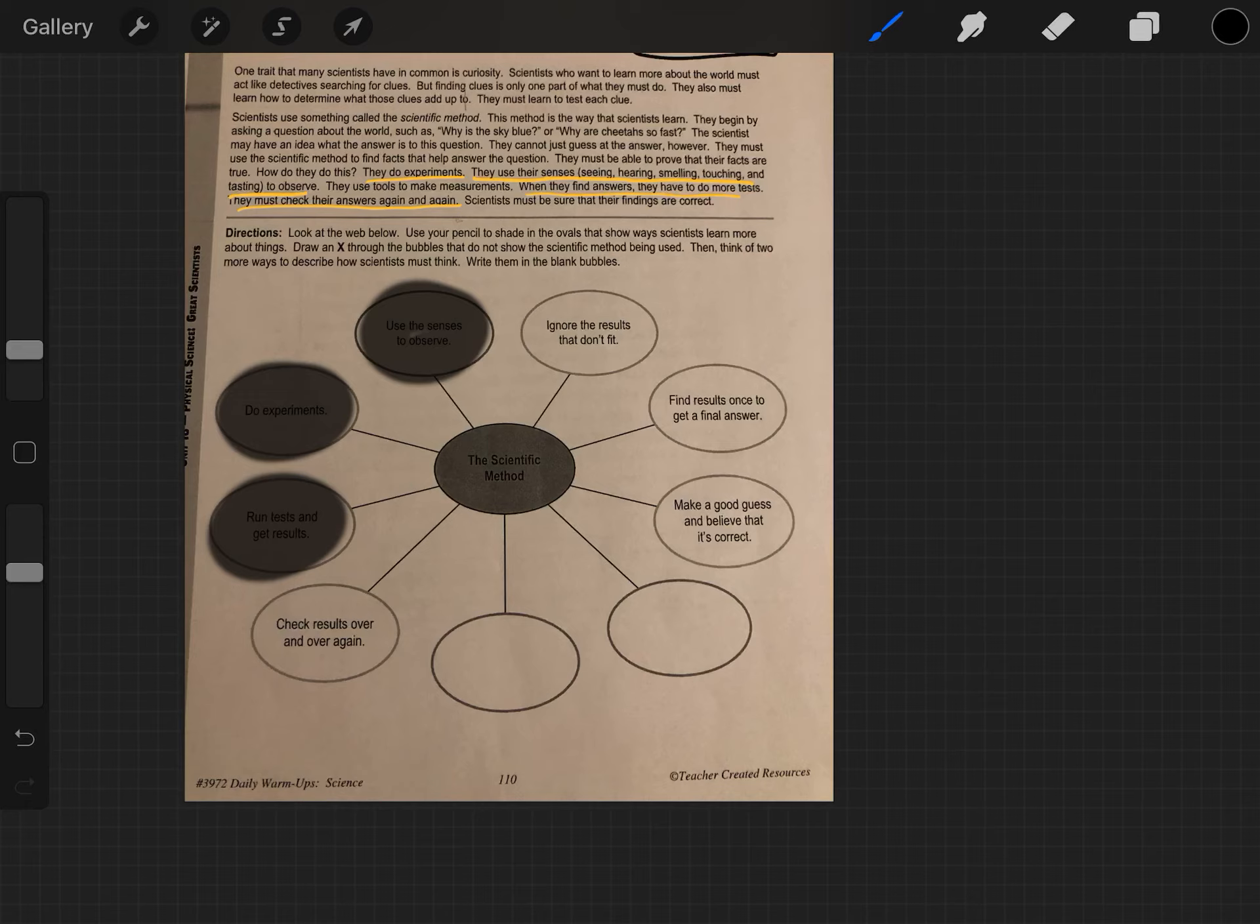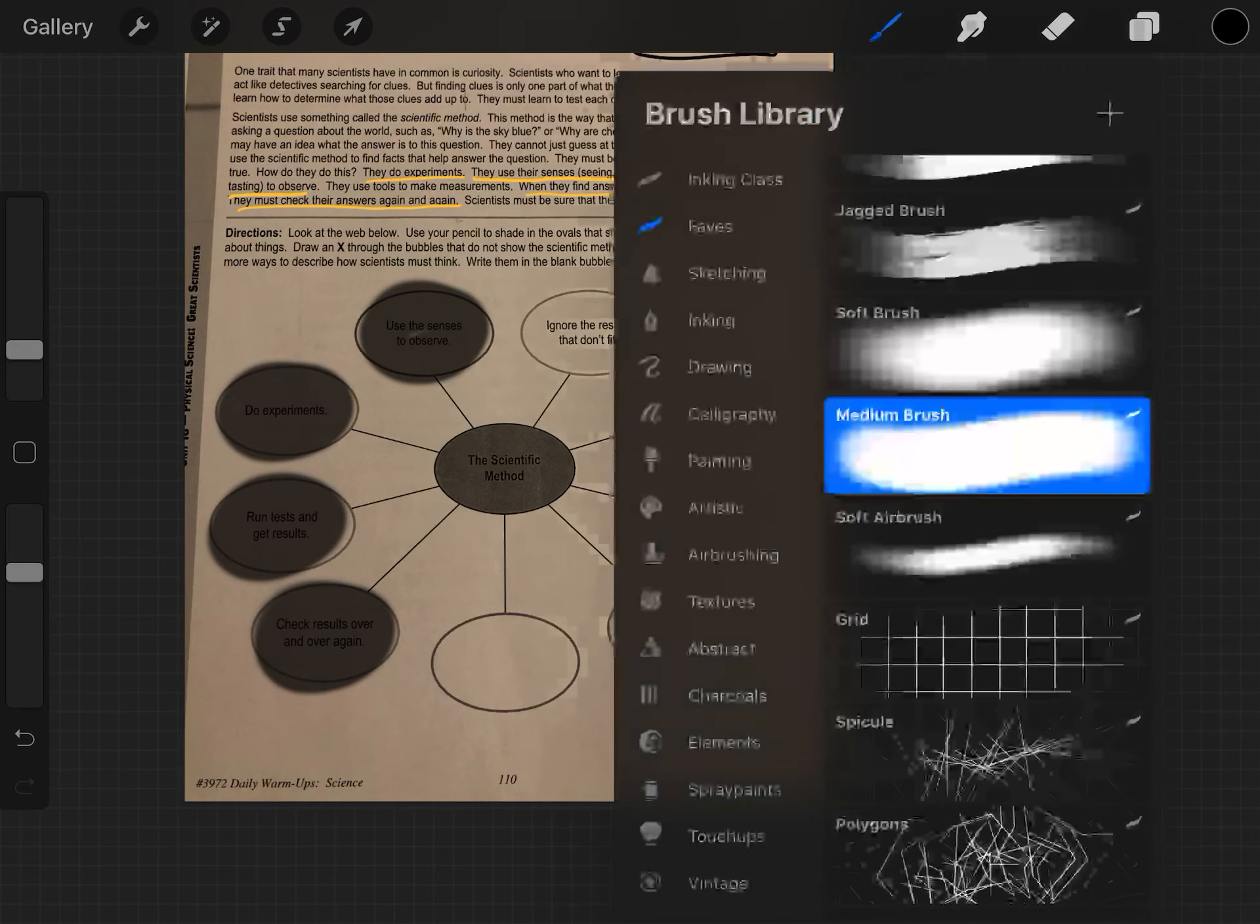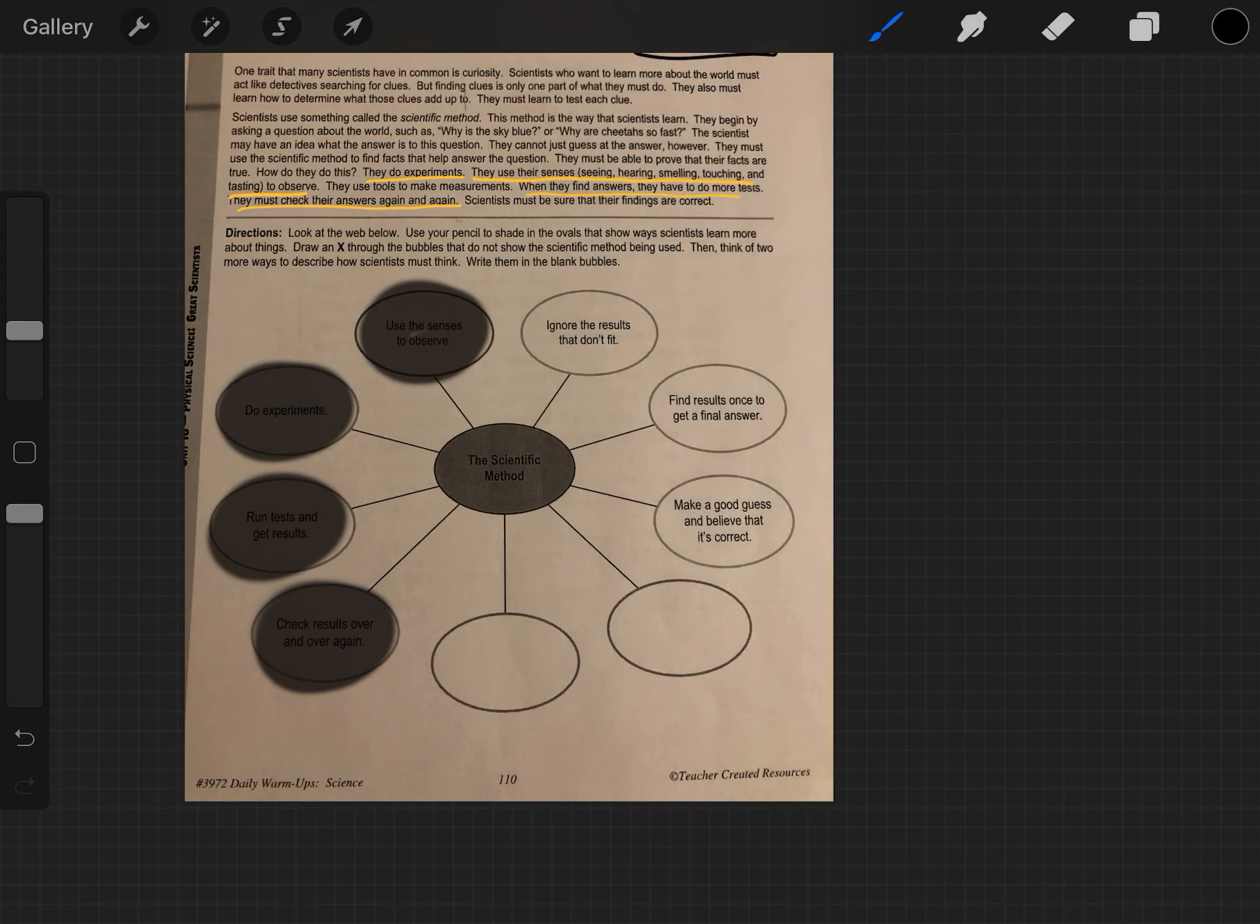Check test results over and over again. We already have that highlighted. Yes, they must check their results over and over again. Now, what about ignore the results that don't fit? Absolutely not. Scientists can't just throw out data because it doesn't fit their hypothesis. That goes against everything science stands for. So in our experiment, maybe we really, really like Dove chocolate and we're really upset that it doesn't melt the fastest and it's not good for baking. Well, we can't pretend that those results didn't happen just because we want Dove to be the best. So, no.